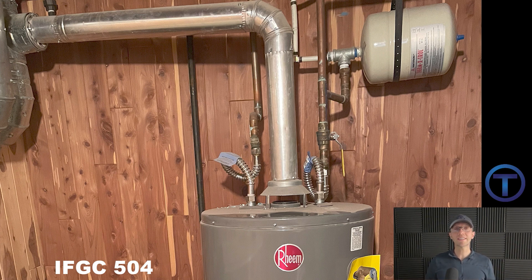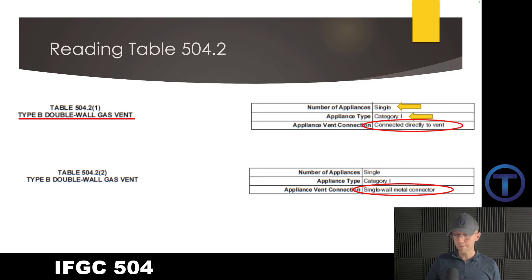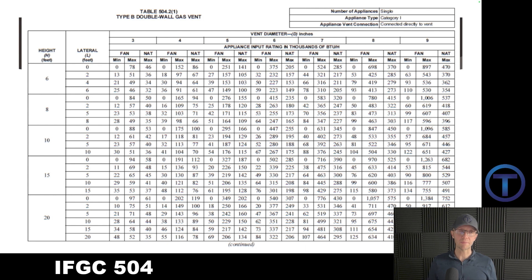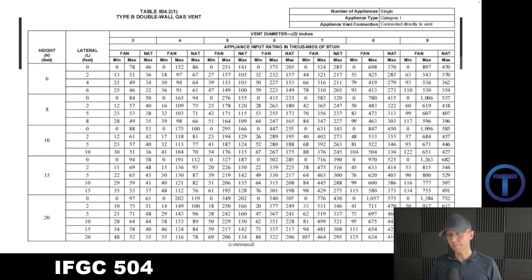Think about when you install water heaters. Most of the time we're running a single wall metal connector as our connection to the vent from the water heater. And that would be found on Table 504.2(2). But the way you know which one to look at is by focusing on those small tables. You have the overall section right up at the top on the right side, and that's going to help narrow down which of these many tables you're going to use. As you flip through, you'll find tables for masonry chimneys too, but we're not really into the sizing of those.